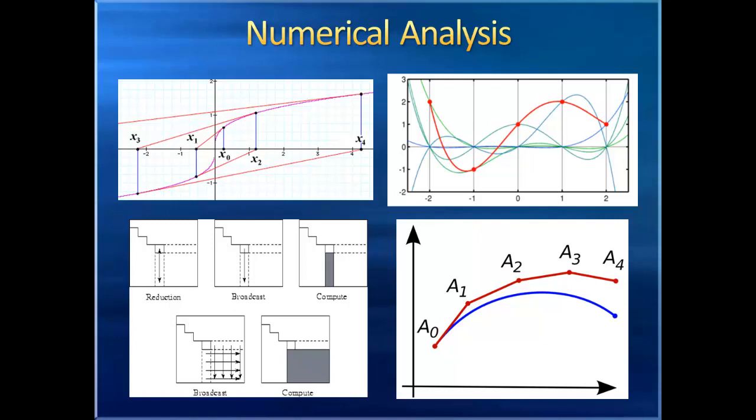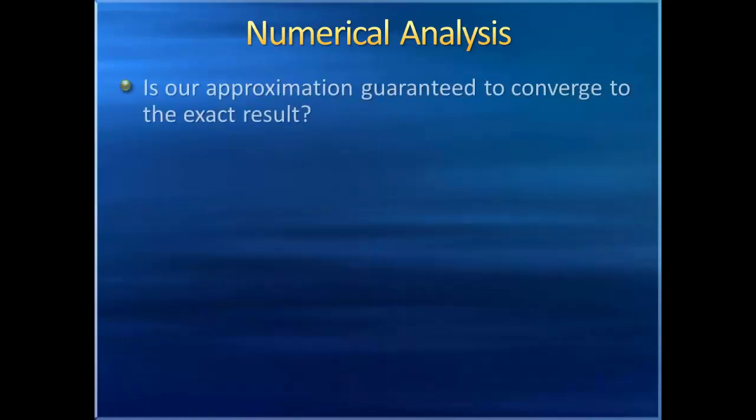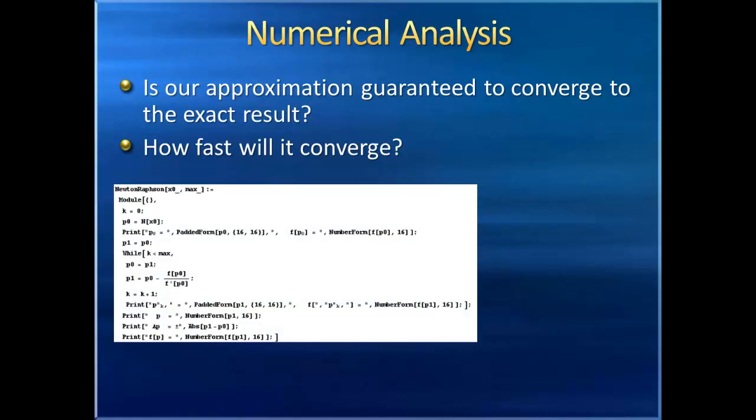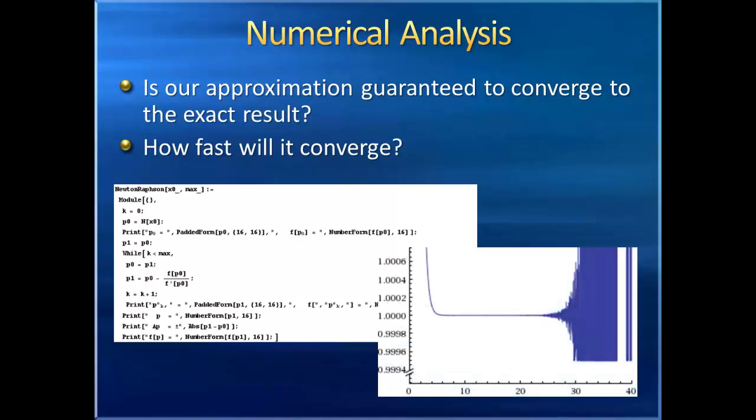When we study numerical analysis, we often want to know, is some approximation guaranteed to converge to the exact result? And how fast does it do so? Numerical analysis is especially of importance to computer scientists, who not only want to design effective algorithms that balance accuracy and runtime, but also must be careful that their algorithms are stable. Otherwise, in a large enough program or a large enough input, a tiny round-off or truncation error can cause a huge discrepancy in the final solution.